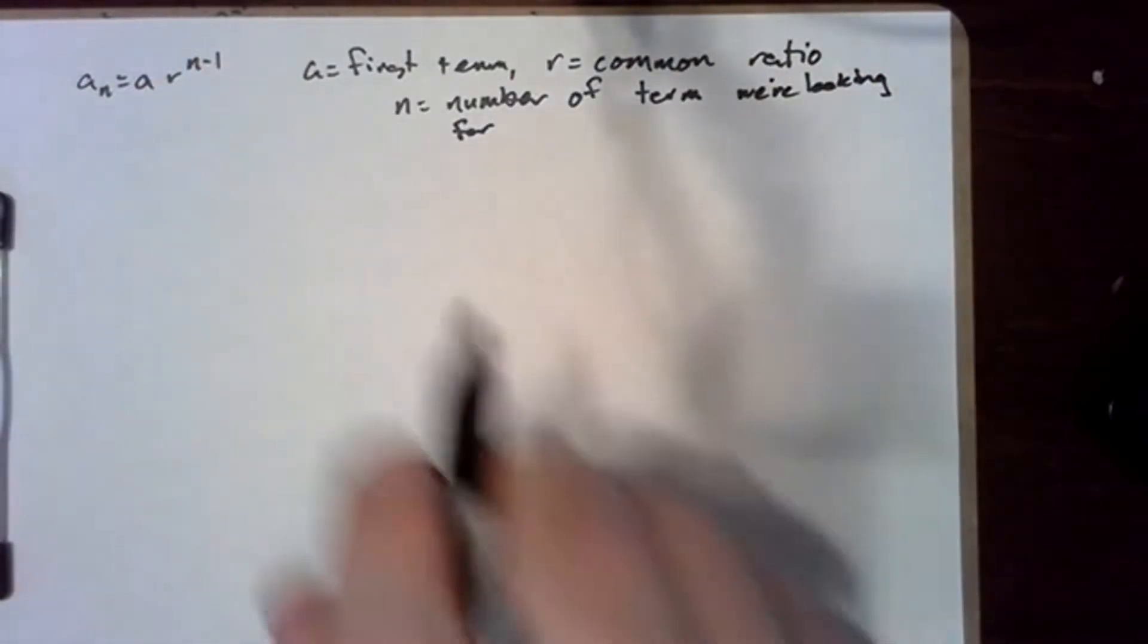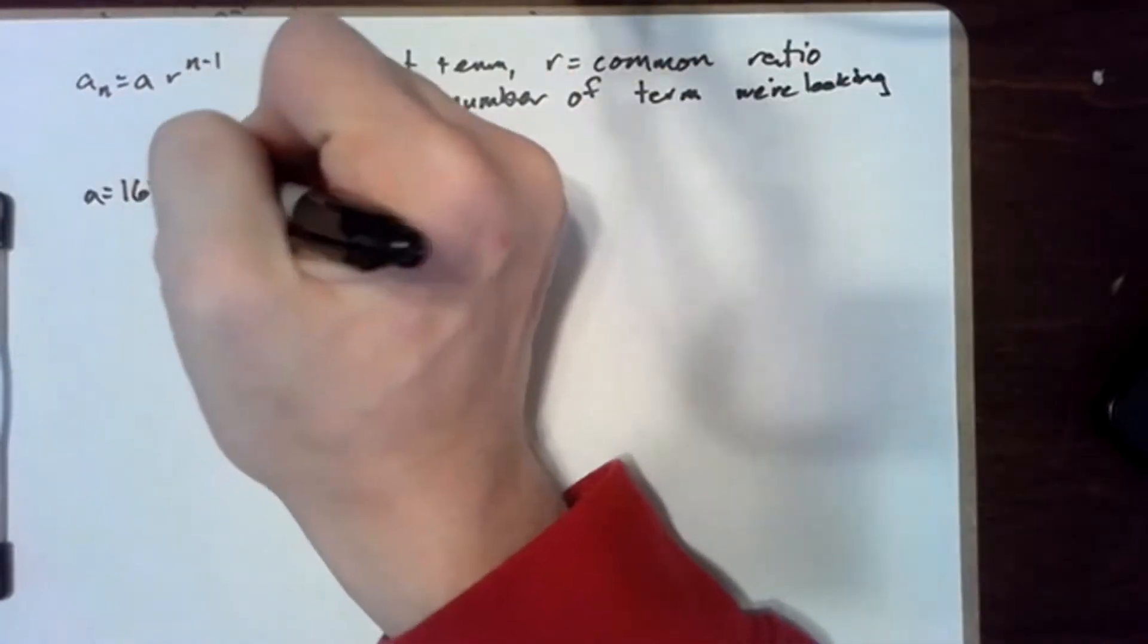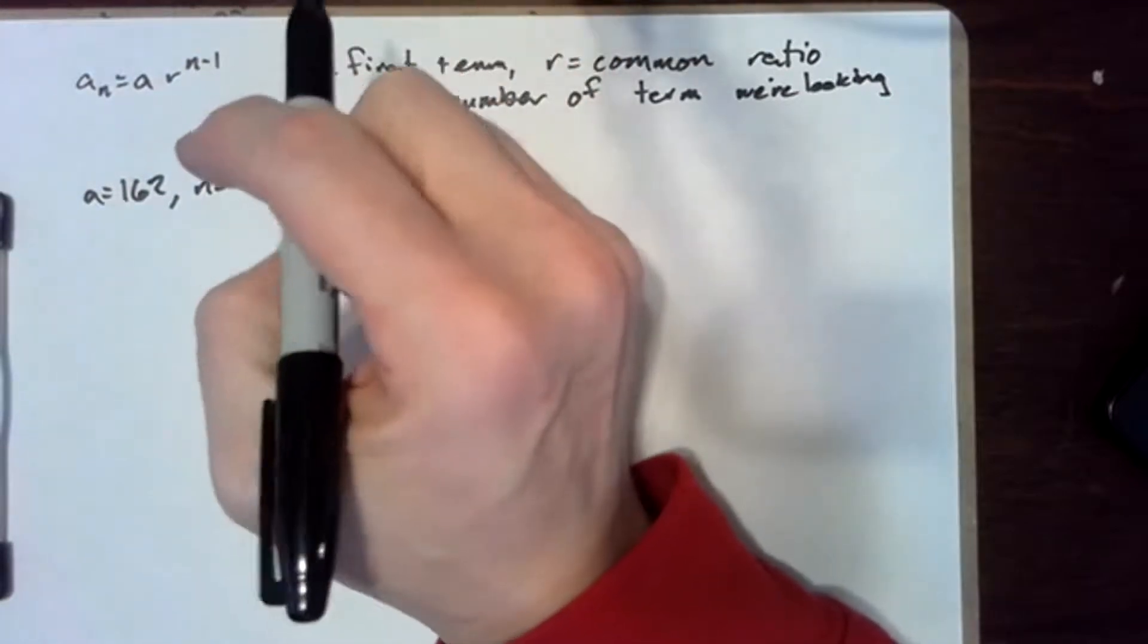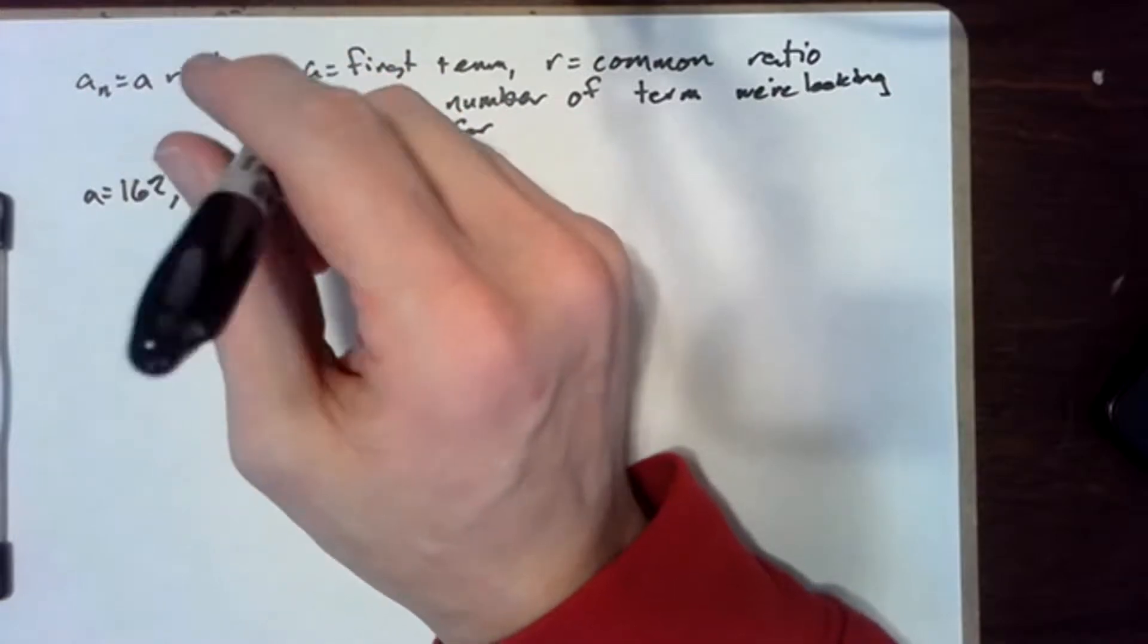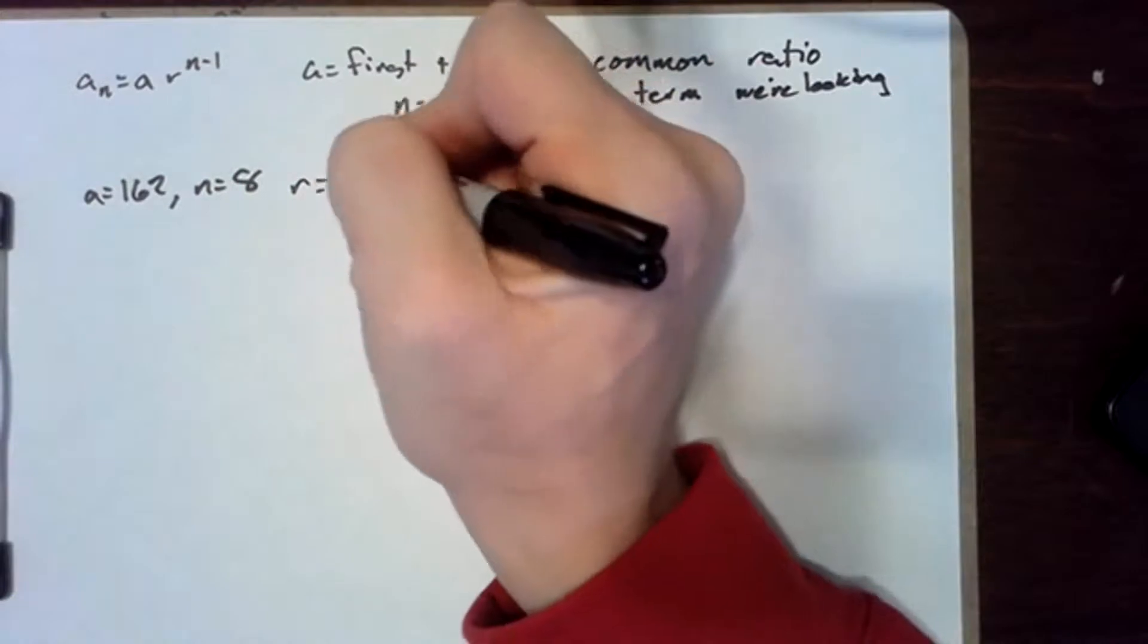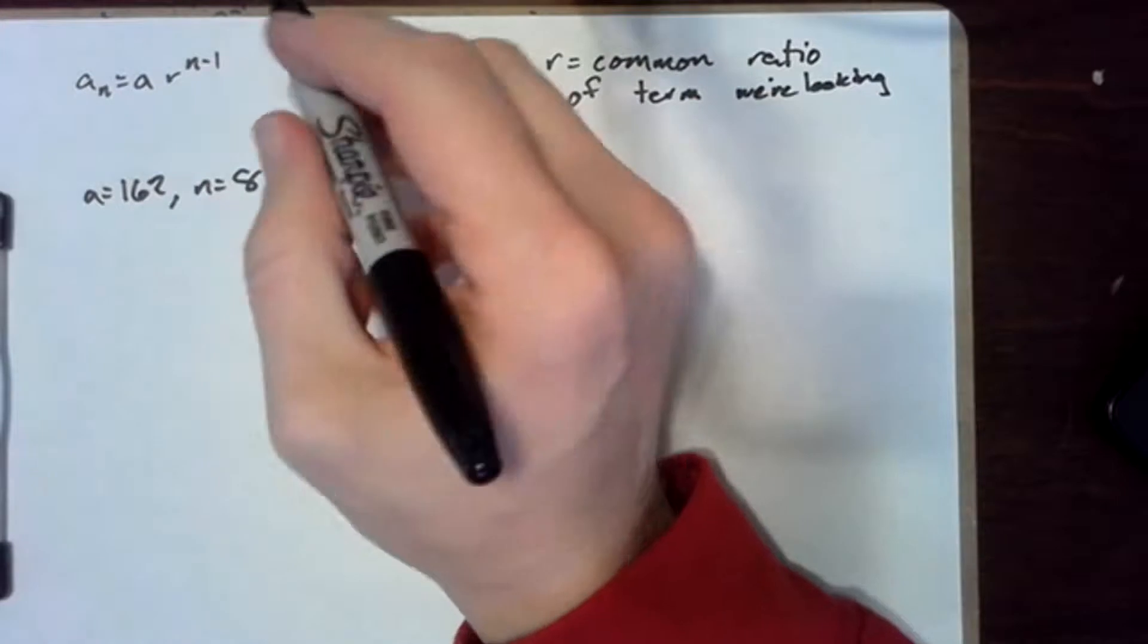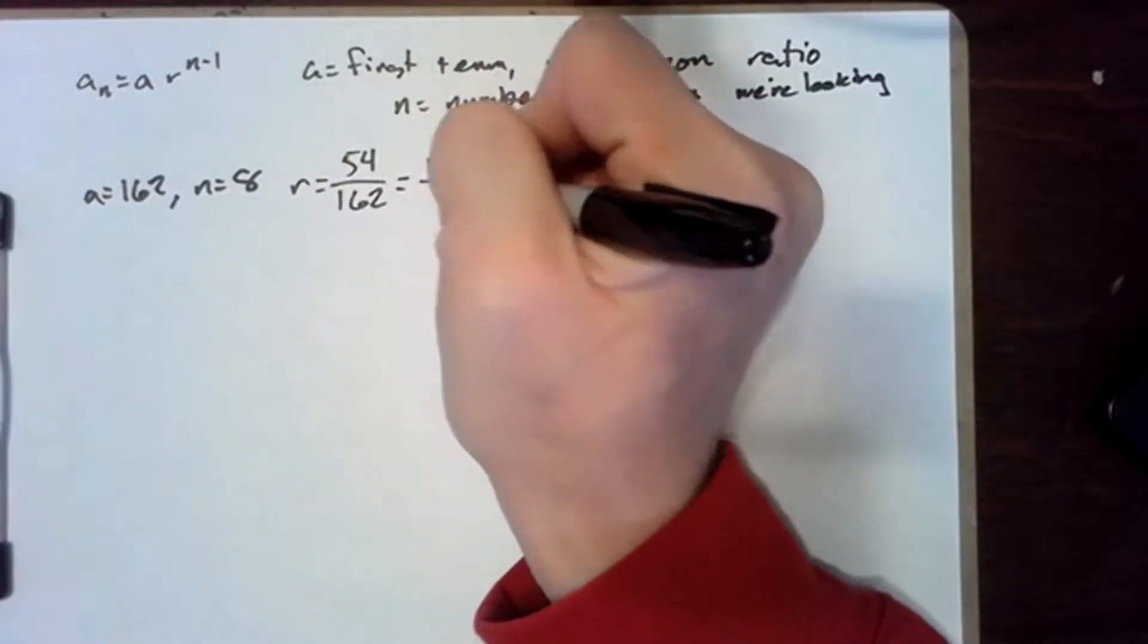In this case, our first term a is 162. We're looking for the eighth term, so n equals 8, and we need to find the common ratio, which is the second term divided by the first term, or any subsequent term divided by the previous term. So that's 54 over 162, which is one third.